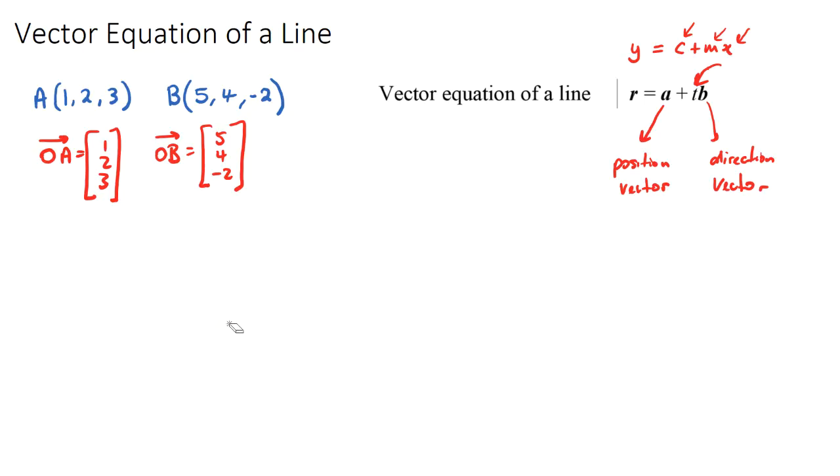Okay, so let's first find the vector AB. Now AB is just the journey from A to B. Now you can use your vector addition and subtraction here by going OB minus OA, and we can solve for that.